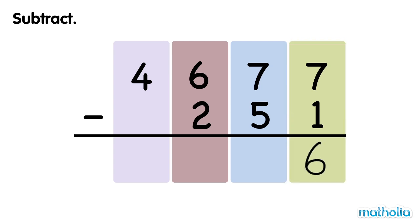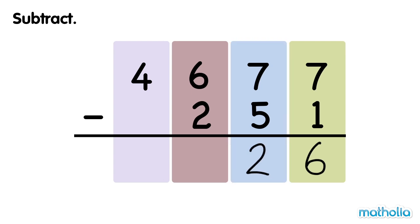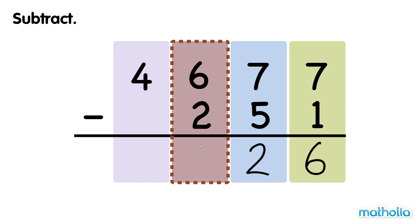Next, subtract the tens. 7 tens minus 5 tens equals 2 tens. Now subtract the hundreds. 6 hundreds minus 2 hundreds equals 4 hundreds.